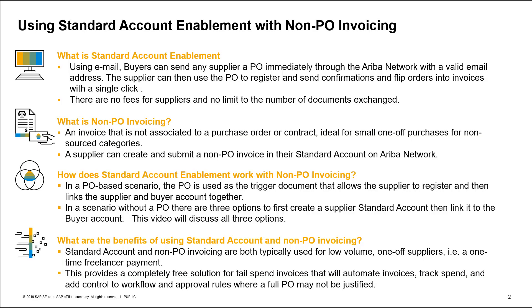Let's start by going through some basics. What is standard account enablement? This is a way to enable suppliers on the Ariba network. By using email, buyers can send any supplier a PO immediately through the Ariba network that contains a valid email address.